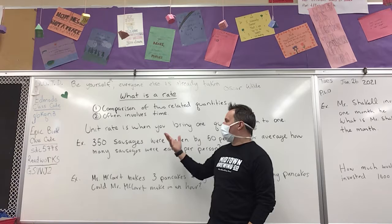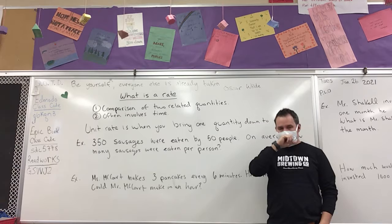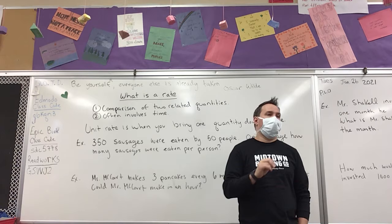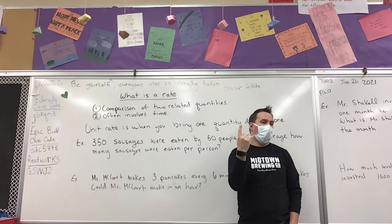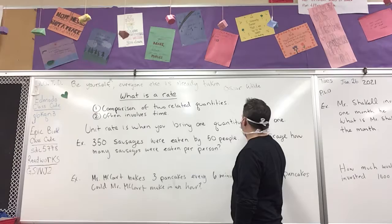So this is important to understand. A unit rate is when you bring one of the quantities down to one. So you bring it to this single level — something per hour, per minute, per liter. You're bringing it to just one. That's what we call a unit rate — one unit. This is what one unit would cost. It's a comparison of two related quantities; often involves time. Unit rate is when you bring the one quantity back to one.